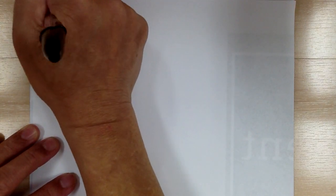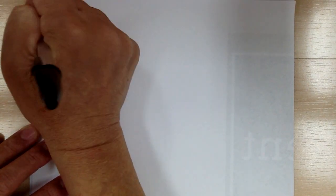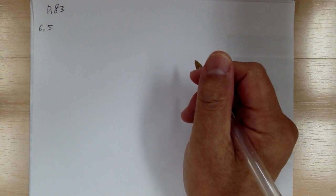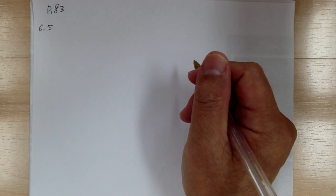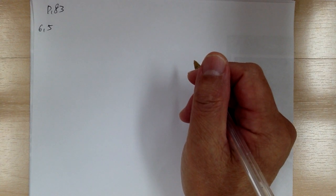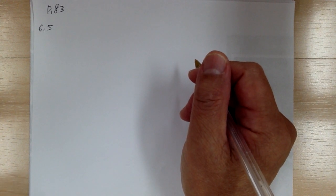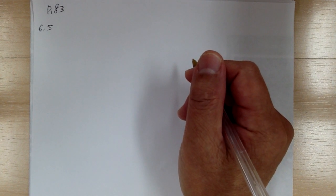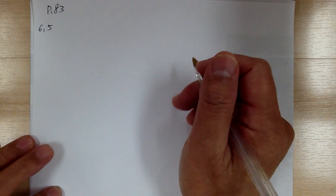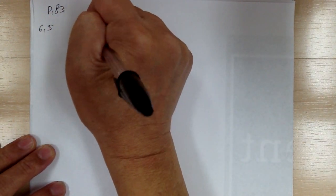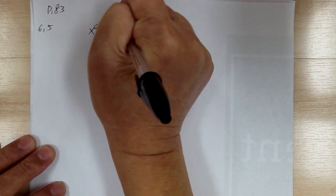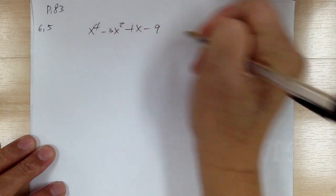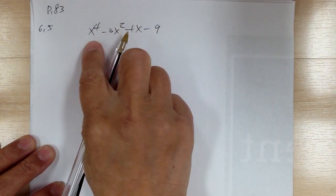Let's go to page 83, section 6.5 — this is about transforming polynomials. The idea is that if you know the roots, you can use that clue to find the polynomial they're asking for. For example, if you have x to the four minus three x squared plus x minus nine, this is the fourth power, so you're going to get four roots: r1, r2, r3, r4.